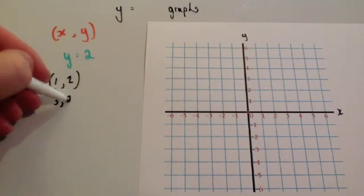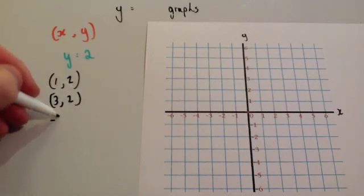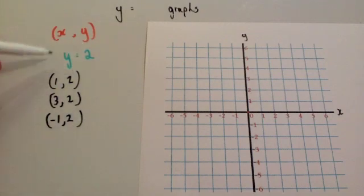Another one would be 3, 2. Another one could be minus 1, 2. All these coordinates follow this rule. They all have a y part equal to 2.